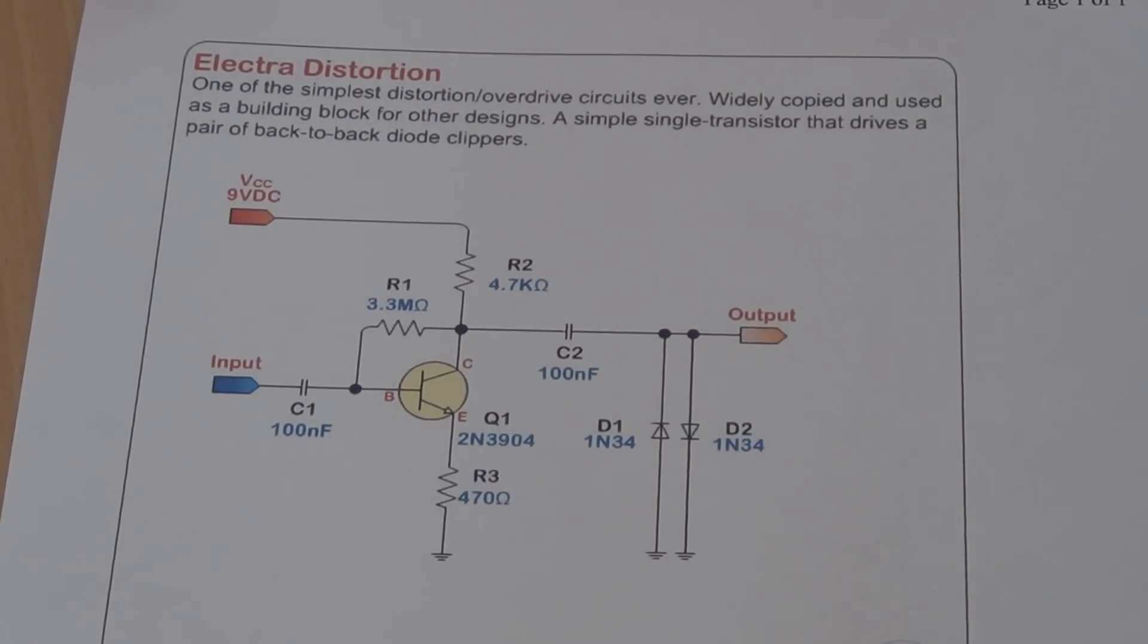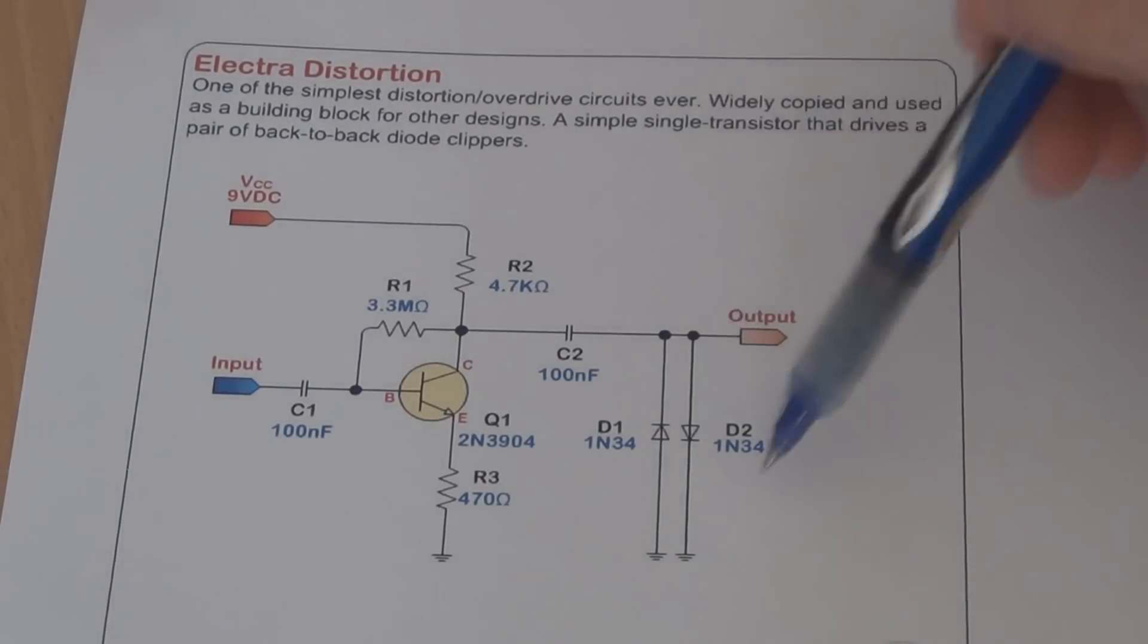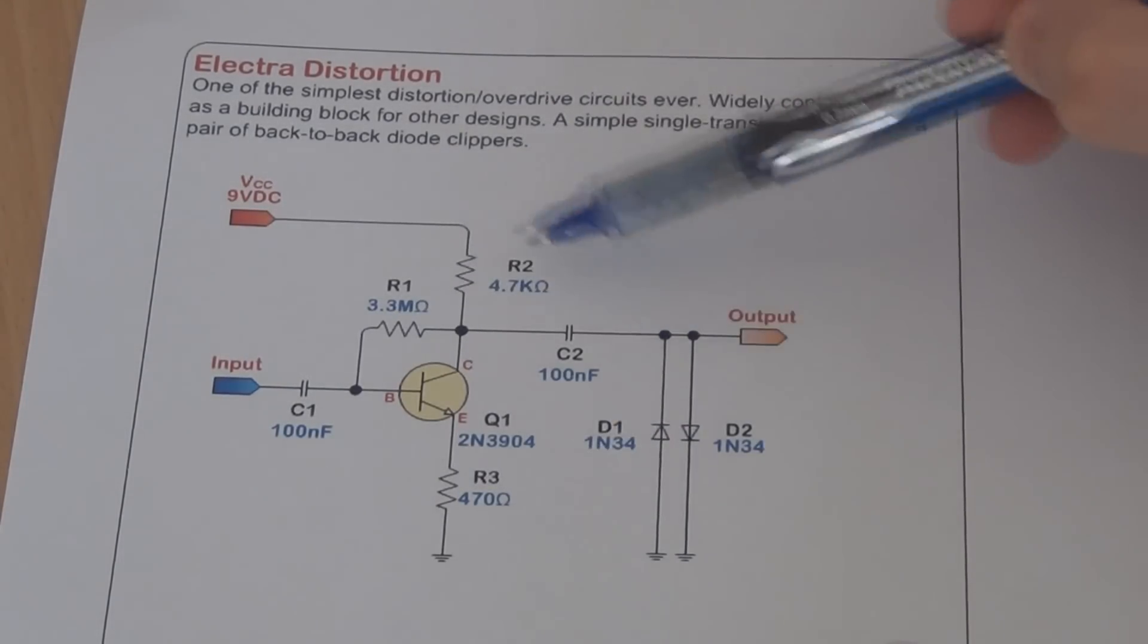Basically these diodes on the output provide the clipping of your signal and that's what gives you that dirt sound. This part of the circuit is pretty much a boost pedal and this part of the circuit provides the clipping of your signal.